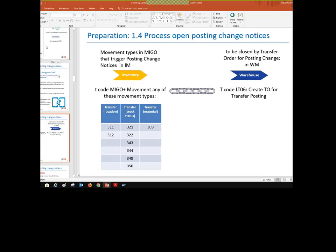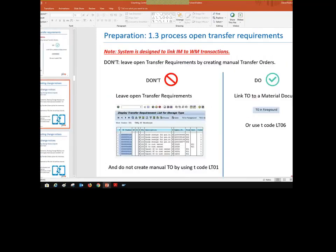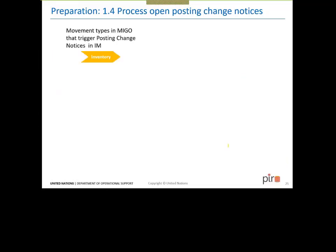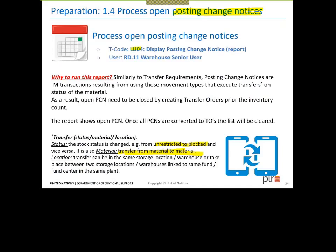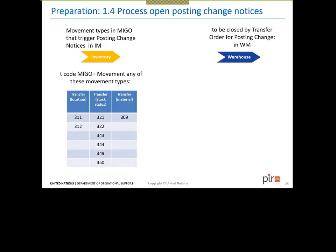Just to finish this section before the break: the last slide was about pending or open posting change notices, checked with T-code LU04. When you have amounts pending, it's because the transaction was done in inventory but the related transaction was not processed in the warehouse. For posting change notices, the typical movement types in MIGO that trigger them are transfer of stock between locations, transfer of materials, or changes of status. Inventory managers process MIGO with these movement types, and then warehouse users need to process the TO using T-code LT06 with a reference to the material document.